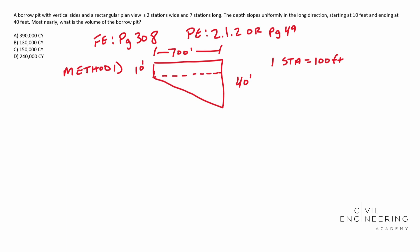So we're going to split this into two different areas. So this is going to be area one. This is going to be area two. So area one is equal to 10 feet times 700 feet and that gives you 7000 square feet. As far as area two goes it's going to be 40 feet minus 10 feet times 700 feet times a half because it's a triangle and that gives you 10,500 square feet. So this guy is the upper one and this is the lower one.